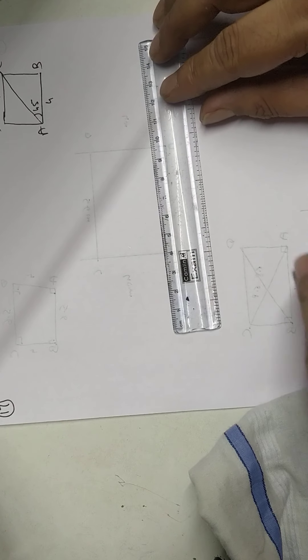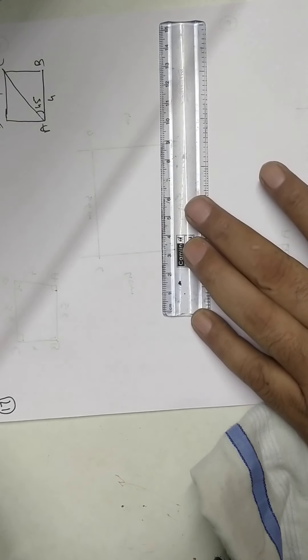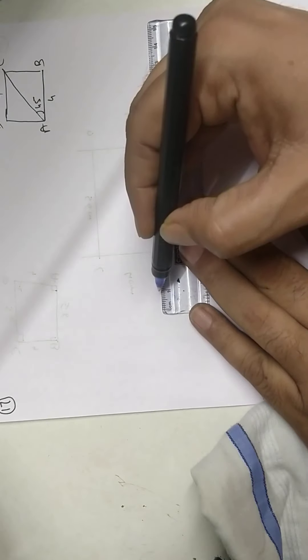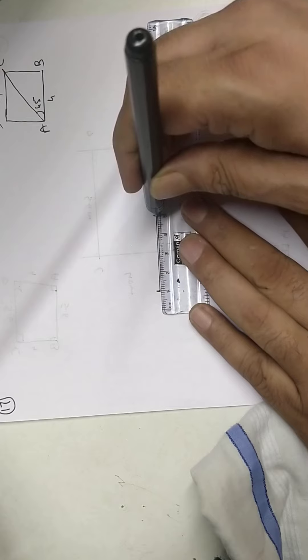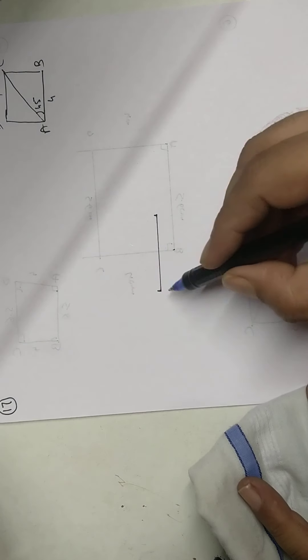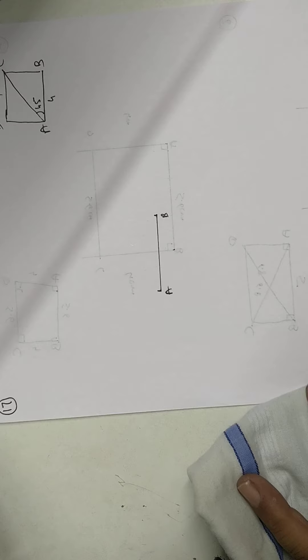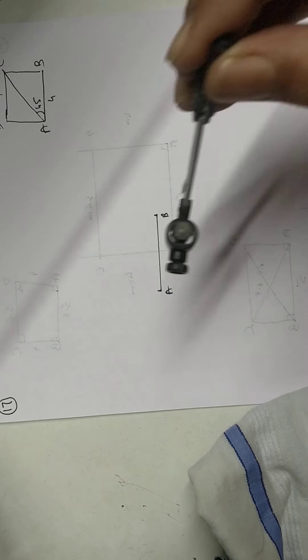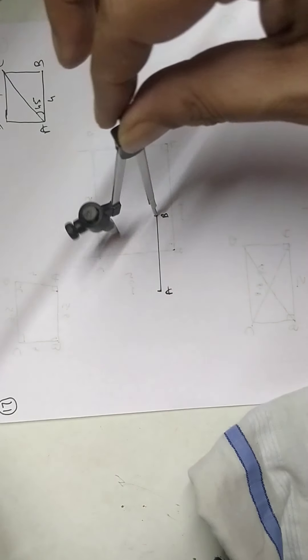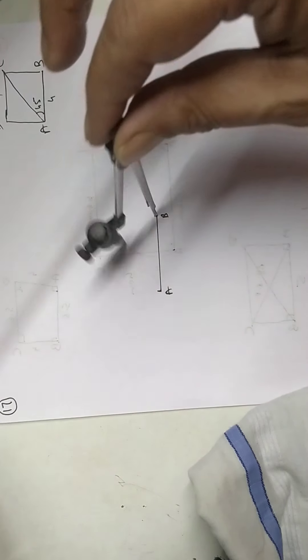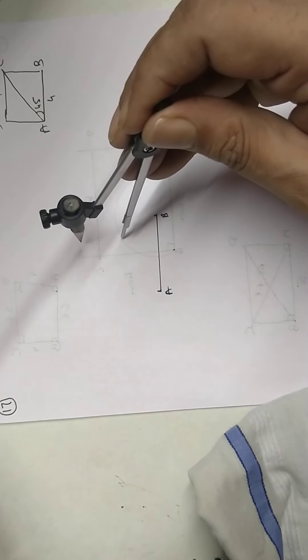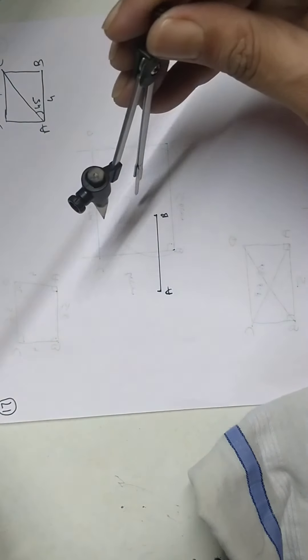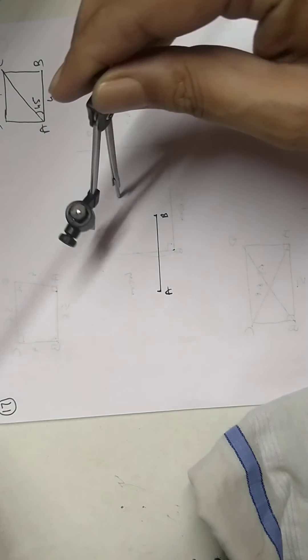Draw AB of 4 cm. Enter AB. Draw 90° at A and 90° at B. Construct. Don't change the arc.